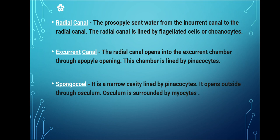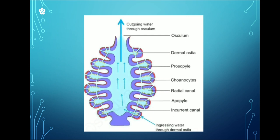Now we will study the Radial Canal. The Prosopile sends water from the Incurrent Canal to the Radial Canal. The Radial Canal is lined by flattened cells called Choanocytes. As you can see in the diagram, the yellow-colored cells are the Choanocytes lining the Radial Canal.